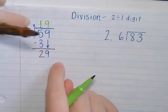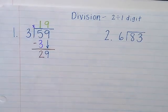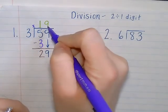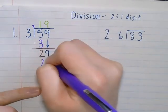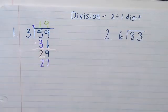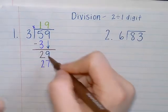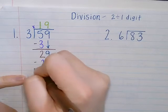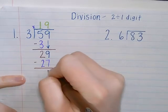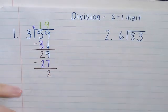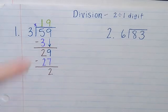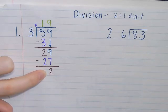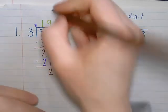Again, I need to check my math, so I need to multiply. Three times nine is equal to 27. And then I subtract that 27 from 29, and I'm left with two. There's nothing else to bring down. I know that three cannot go into two equally, so that becomes my remainder.